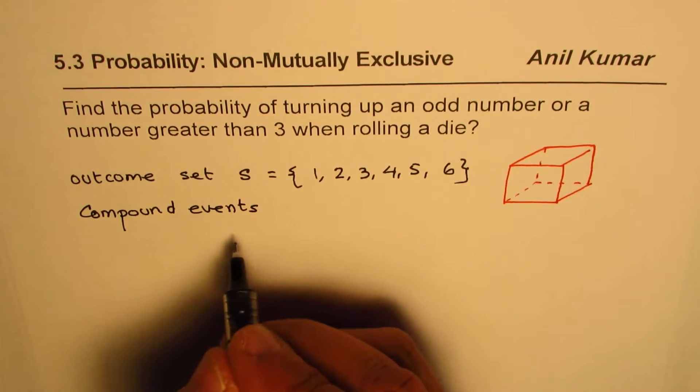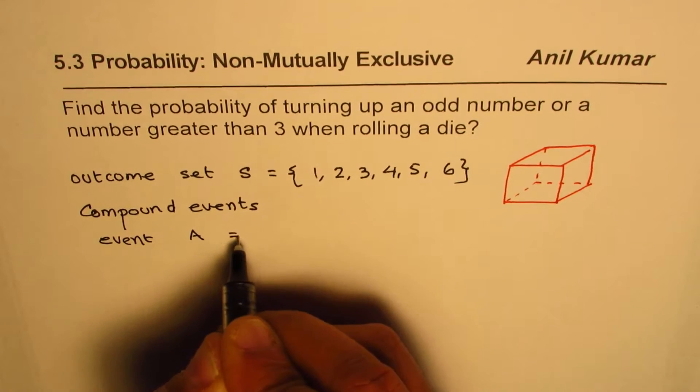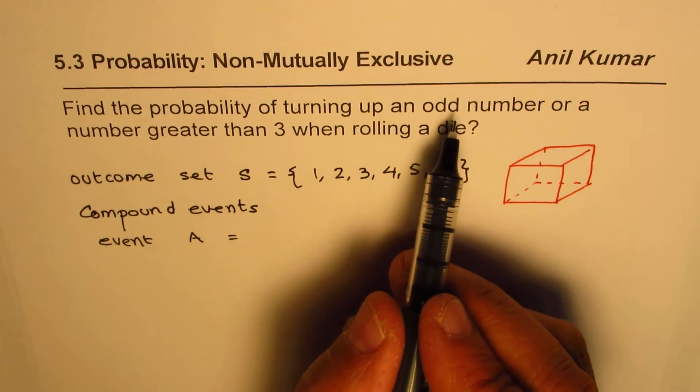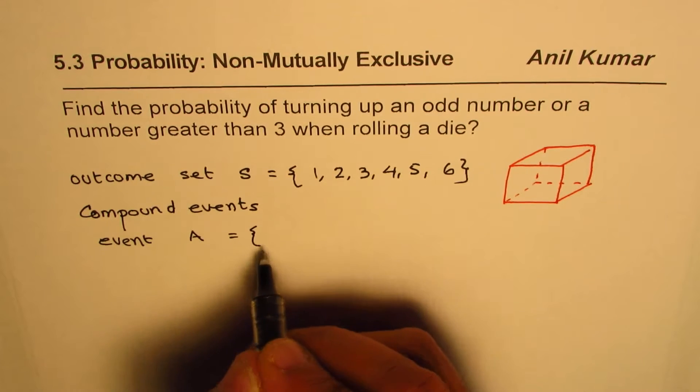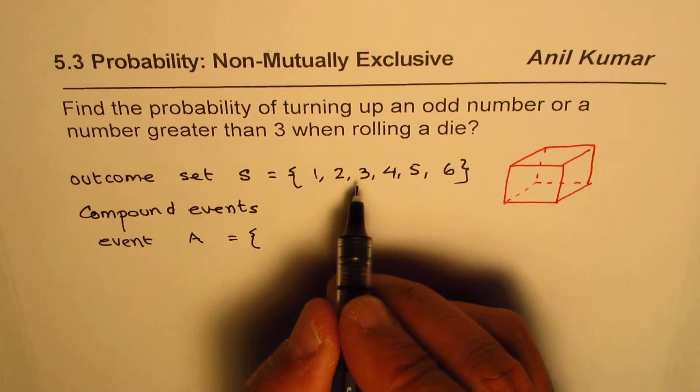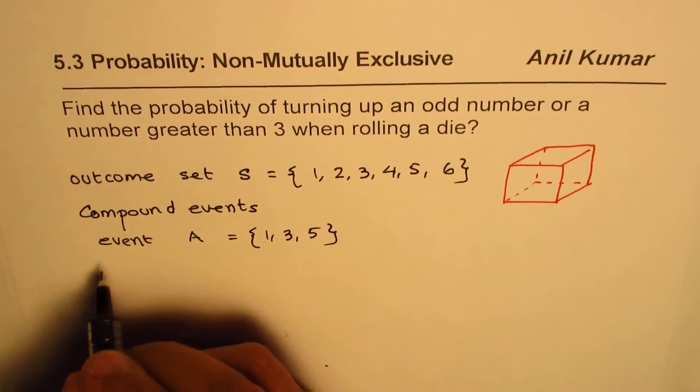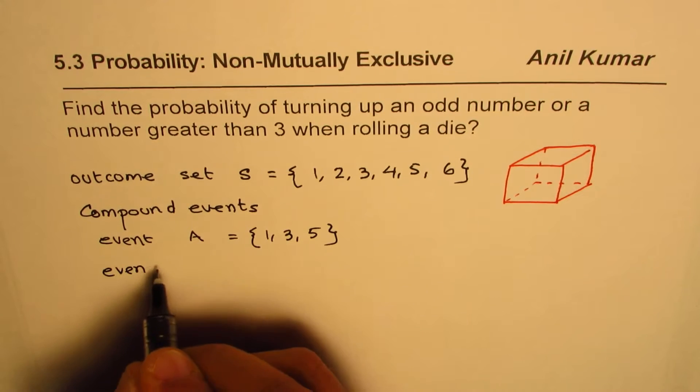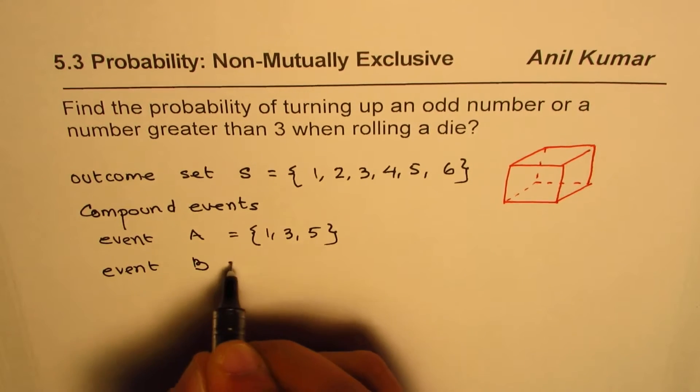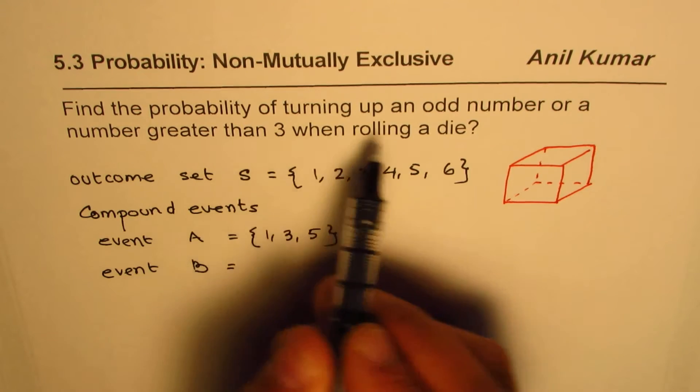So let's say event A. So we will define event A as the event with odd numbers. So odd numbers out of these are what? Odd numbers are 1, 3 and 5. So odd numbers are 1, 3 and 5.